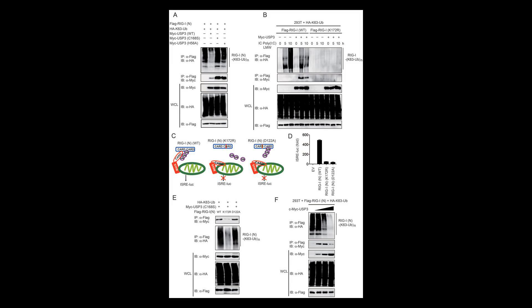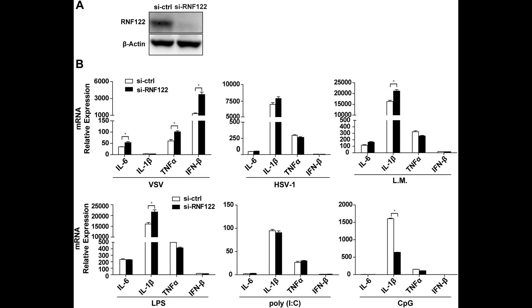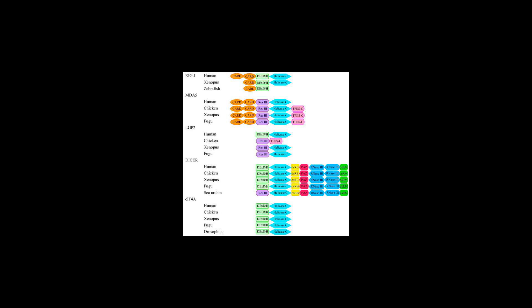Upon detection of a viral infection, two of the RLRs, RIG-I and MDA5, possess the ability to activate a complex signaling network that leads to the production of pro-inflammatory molecules.